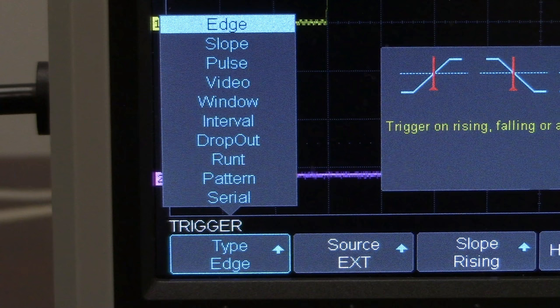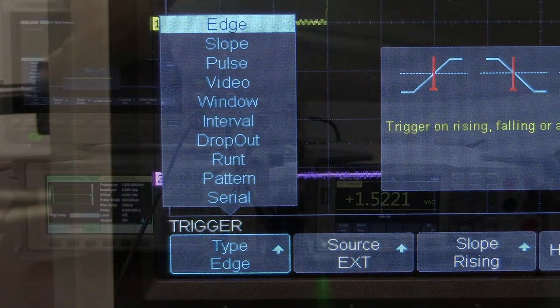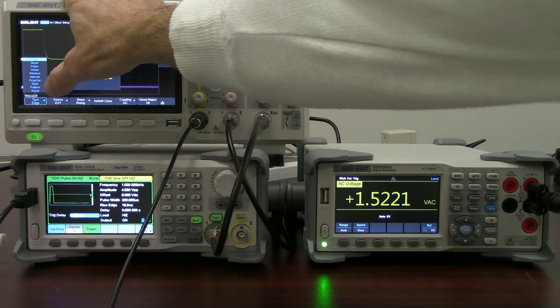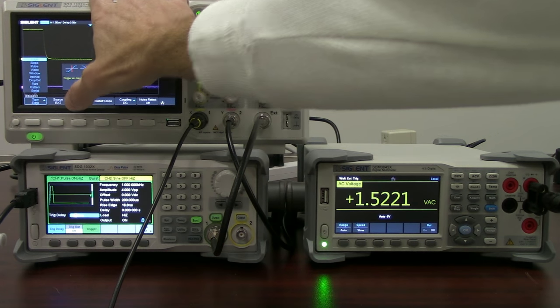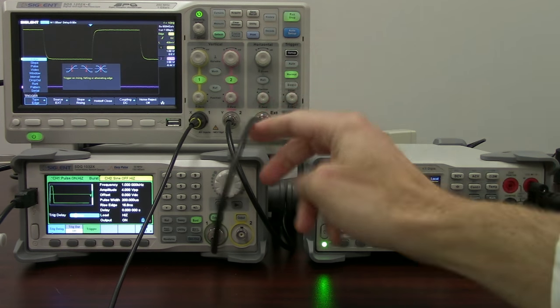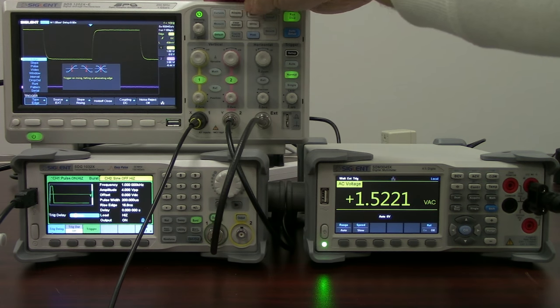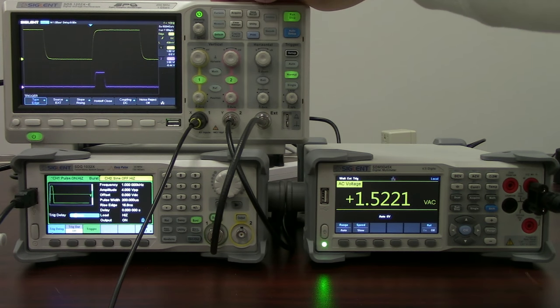So I'm going to go to set up trigger, take a look at edge, slope, pulse, video, window. It has all of the normal trigger types that a normal oscilloscope channel has. It's just going to be external and it's not going to plot it on the display. So we're not going to actually see anything on the display itself, but that's okay.